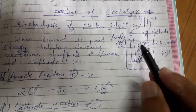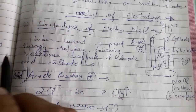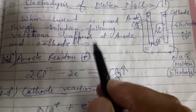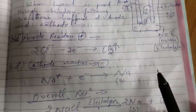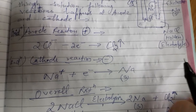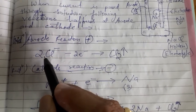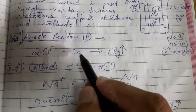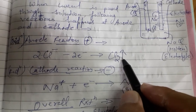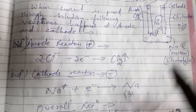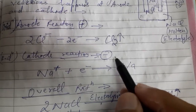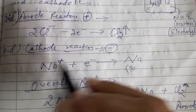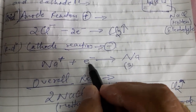There are two types of ions in the solution: sodium ions and chloride ions. When current is passed through the solution, following reactions happen at the anode and cathode. At the anode, Cl⁻ ions go to the positive terminal, lose their extra charge in the form of electrons, and get converted into chlorine gas. At the cathode, Na⁺ ions go to the negative terminal, gain electrons, and change into sodium metal.